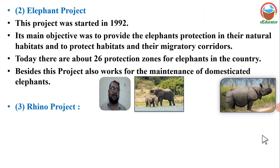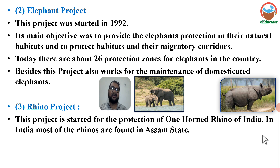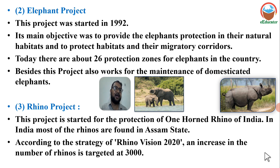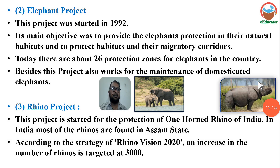Rhino Project: This project was started for the protection of one-horned rhinos of India. Most of the rhinos are found in Assam in the swampy rhythm of the Brahmaputra River, and some parts in West Bengal. According to the strategy of Rhino Vision 2020, the target was to increase the number of rhinos to 3,000.